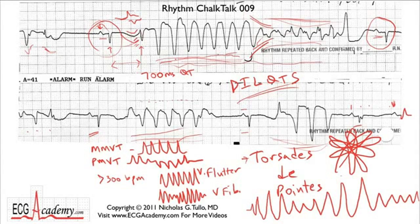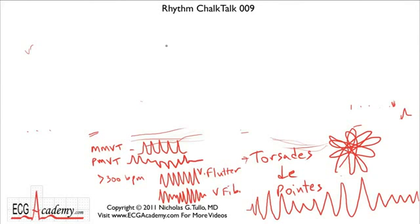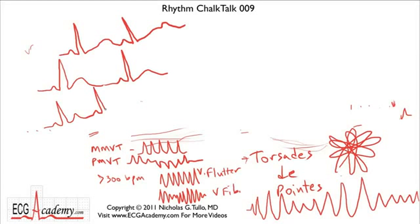Let's talk about how to recognize torsades. Drawing it out: the QRS is usually narrow but the QT interval is very long — that's a precursor. You'll sometimes see large U waves. Another characteristic is that torsades is pause-dependent. When rates are slower the QT is longer; when rates are faster the QT shortens — that's why we correct the QT interval using the QTc. After a long pause, the QT will generally get even longer.